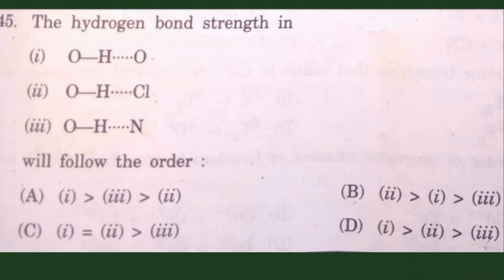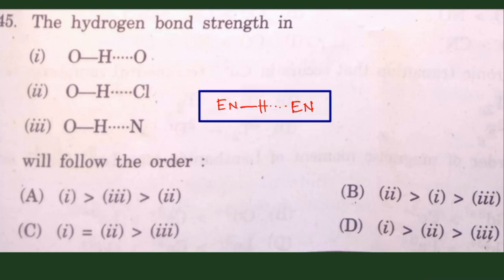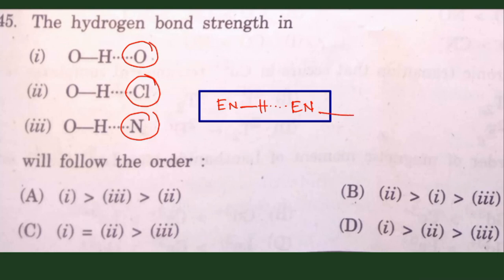The next question is about hydrogen bonding from general inorganic chemistry. Hydrogen bonding occurs between hydrogen and an electronegative element, where hydrogen is covalently linked with another electronegative element. Electronegativity is the major factor for hydrogen bond strength. Oxygen is the most electronegative, then nitrogen, then chlorine. With increasing electronegativity, hydrogen bond strength increases, so the correct order follows O > N > Cl.